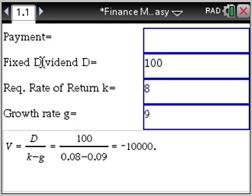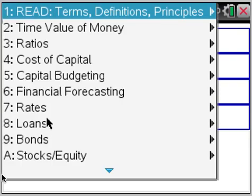Payment, fixed dividend D. Everything is right here. Growth rate G. You just plug in your numbers and you get your answers, and it explains everything to you in the process.